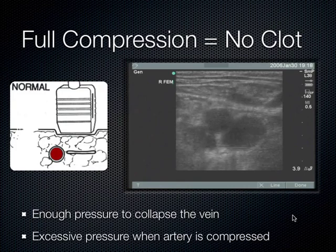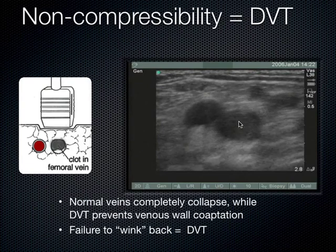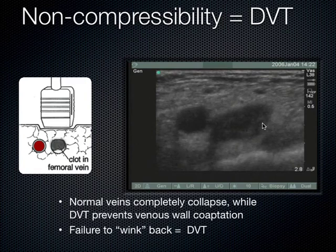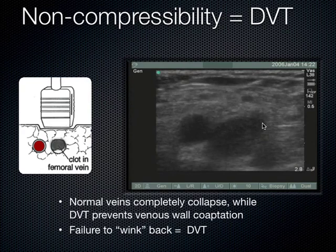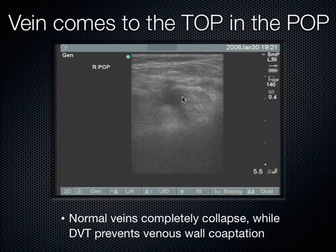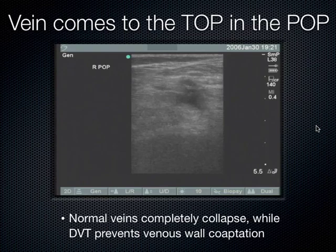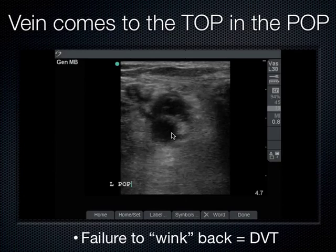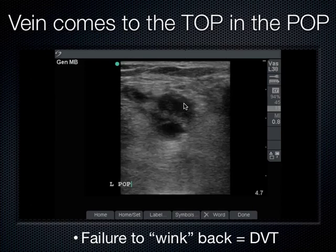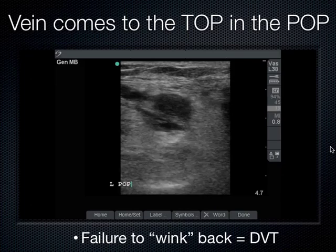A non-compressible femoral vein means DVT. Once you identify a clot, stop compressing — you don't want to dislodge it. Capture video and images, then notify the team. In the popliteal fossa, a normal study shows the vein compressing fully while the artery remains open. A positive popliteal DVT shows the vein non-compressible; sometimes you compress so hard the artery starts to 'wink' back — that's pushing too hard. Once you have the diagnosis, stop moving the probe.